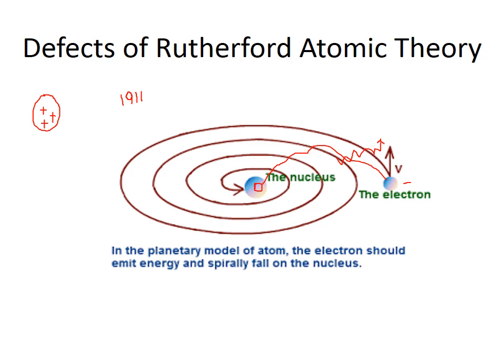The Rutherford atomic theory does not give any information about the stability of an atom. And the second thing is that if electrons are continuously moving and releasing energy, so they have to give a continuous spectrum, while atoms give a line spectrum. Both these defects are further solved by Bohr.